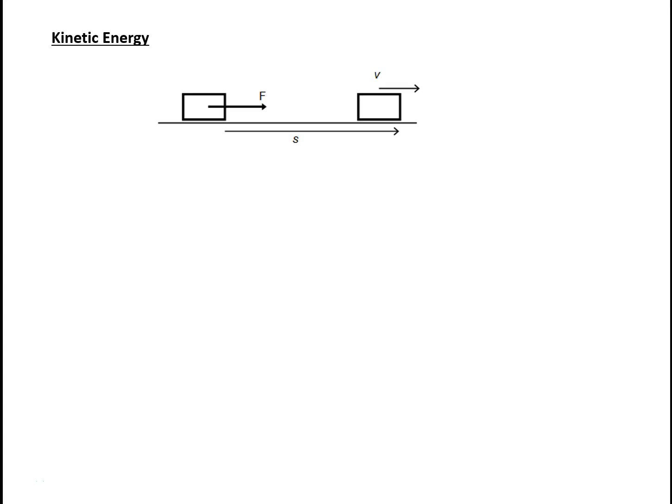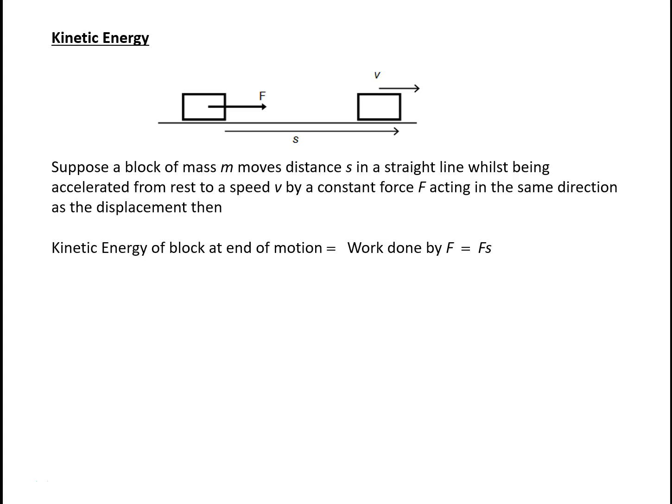We'll now consider the kinetic energy of an object moving at speed v. Suppose we have a block of mass m which moves distance s in a straight line whilst being accelerated from rest to a speed of v by a constant force f, acting in the same direction as the displacement. Then we can say that the kinetic energy of the block at the end of the motion is entirely due to the work done by f, which is equal to f times s.